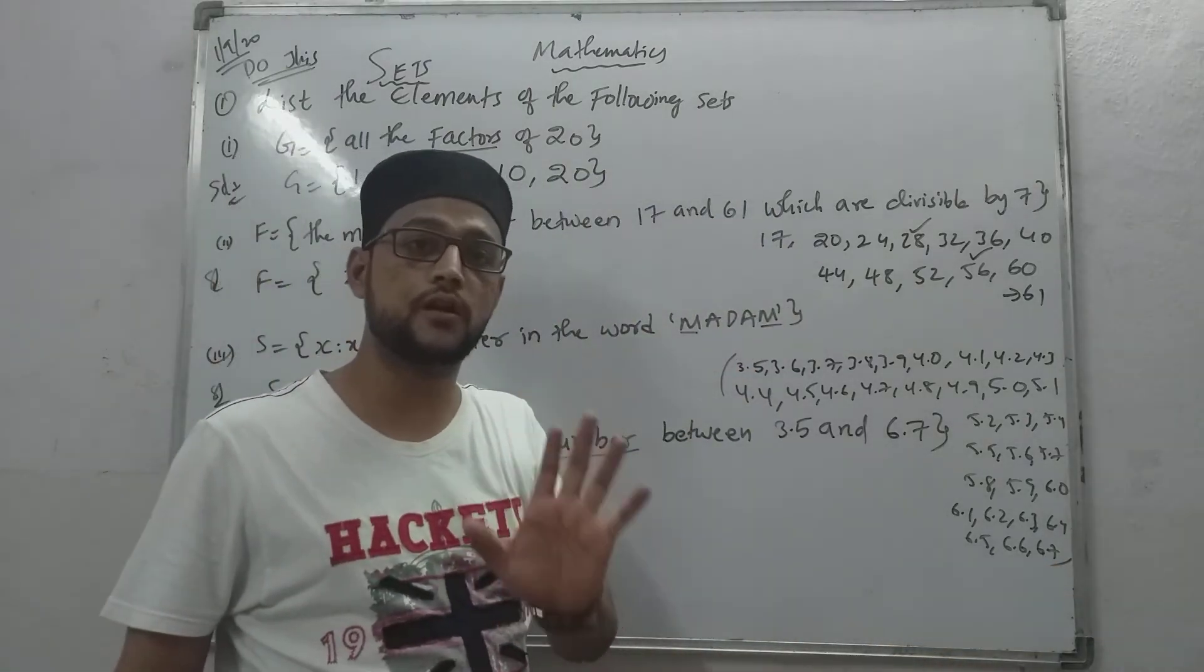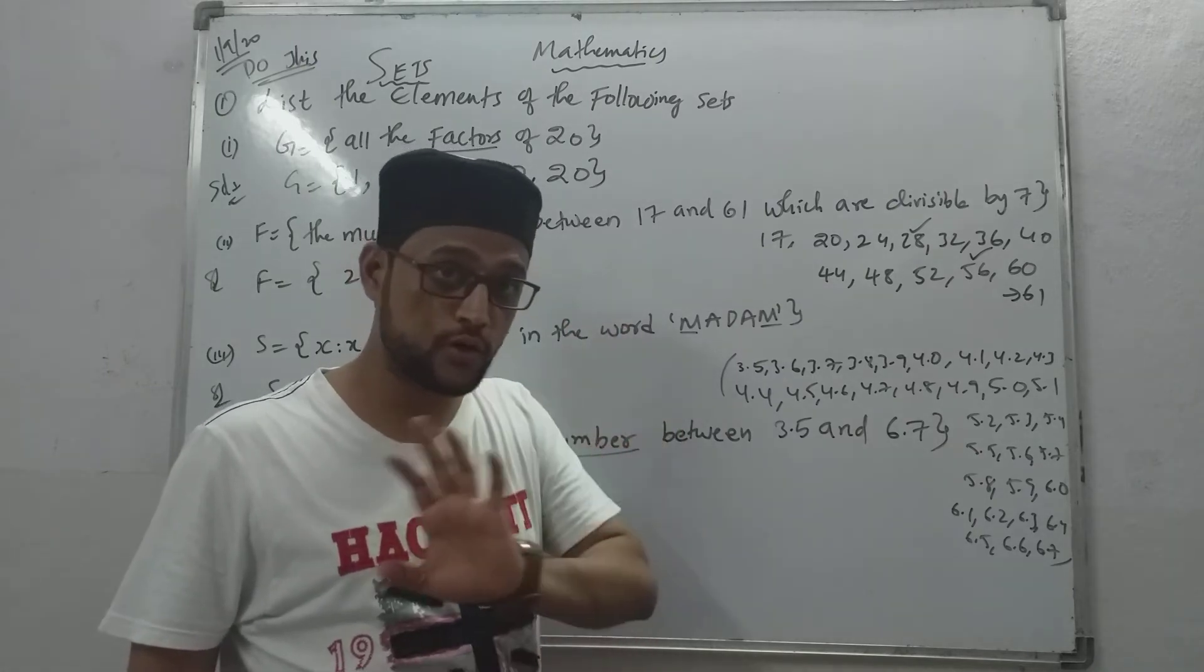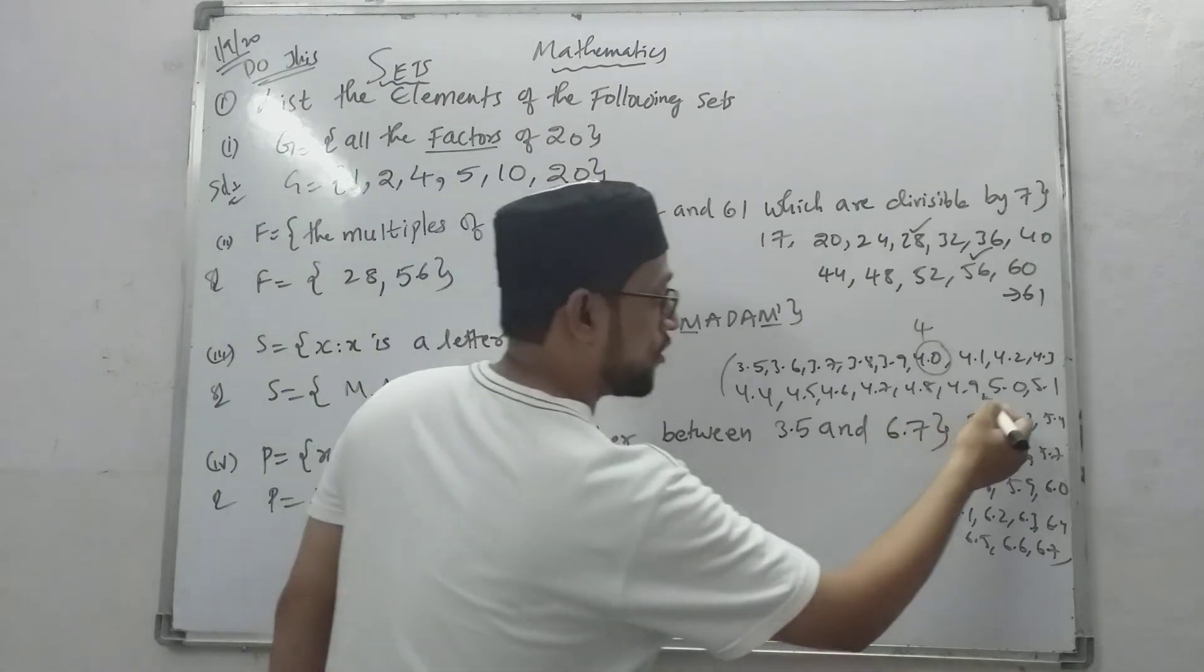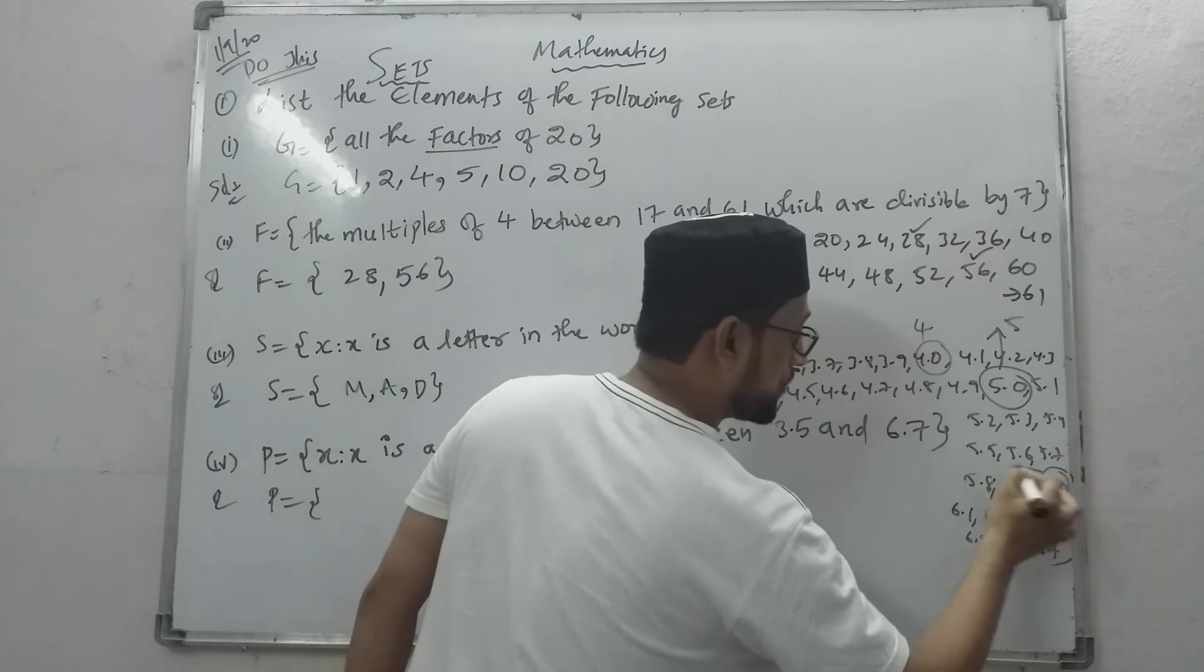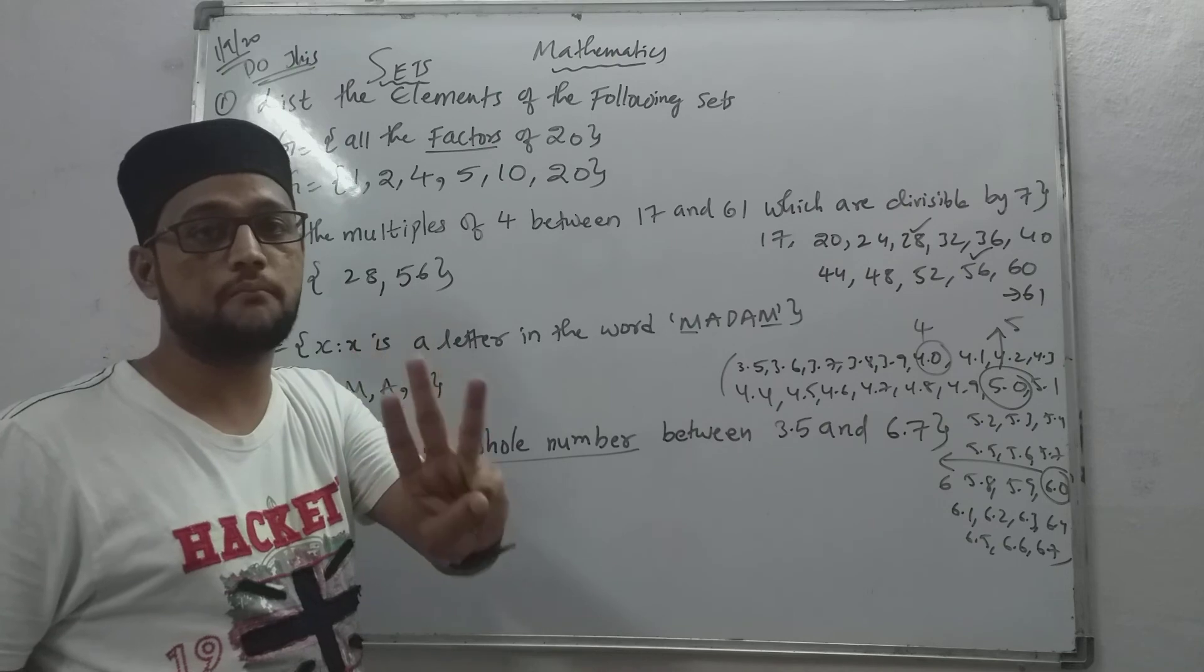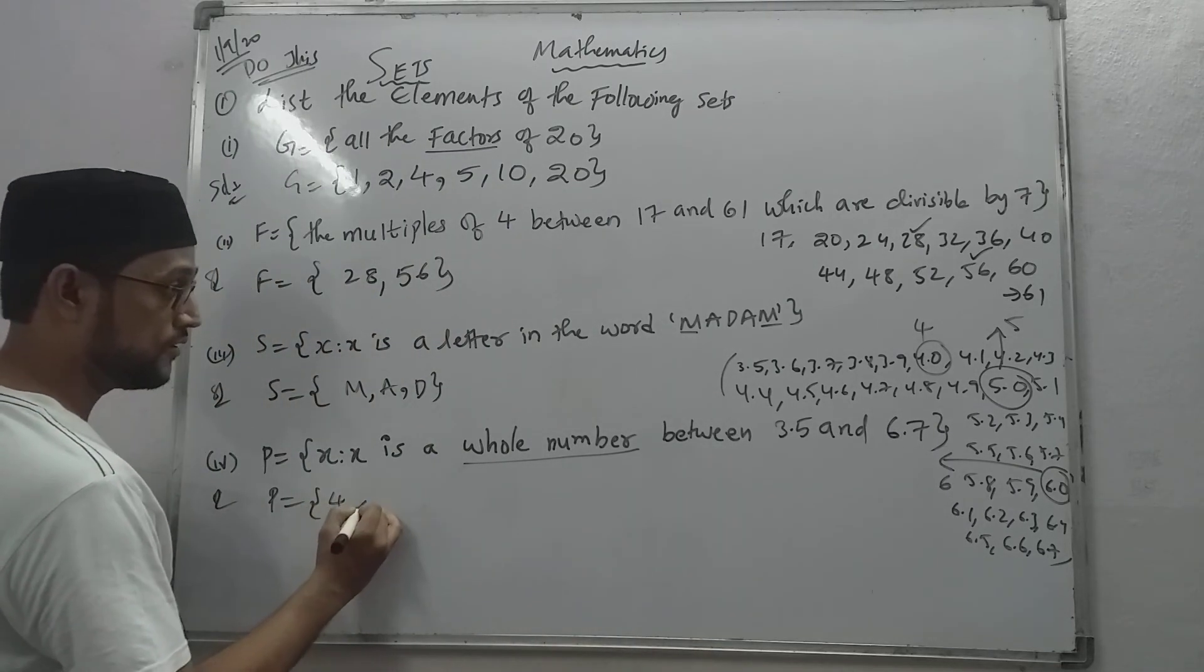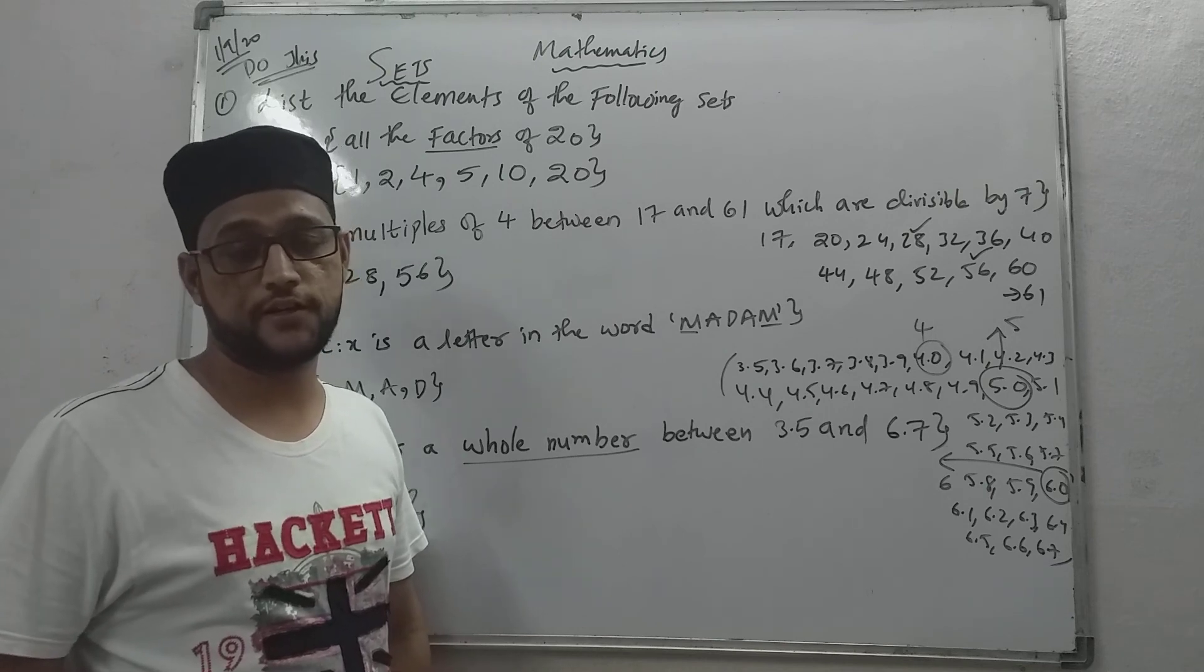And all of you know that whole numbers are the positive numbers which start from 0. We don't have to take any decimal number. That means 4.0 is nothing but 4, which is a whole number. Now 5.0 is nothing but 5, whole number. 6.0 is nothing but 6, whole number. That means there are 3 whole numbers present in between 3.5 and 6.73: 4, 5, and 6. Okay, got it everyone? Now we will continue the next one.